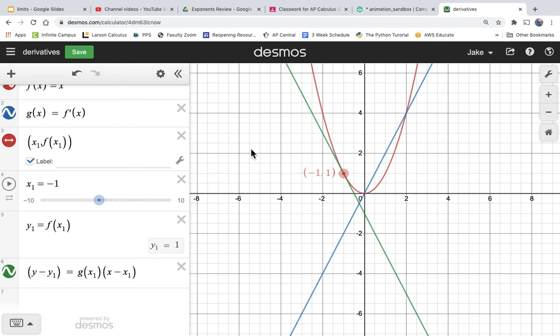Okay. So anyway, that is a slider that shows you the slope of the tangent line.